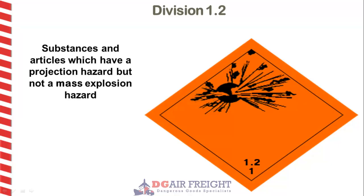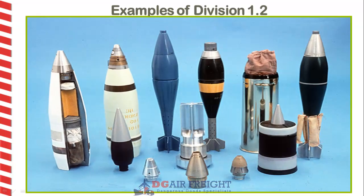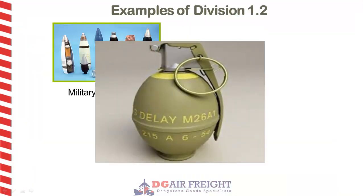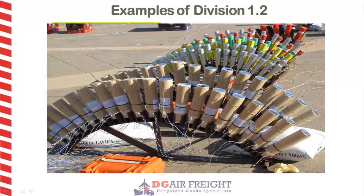The next division is 1.2. These are explosives that have a projection hazard, but not a mass explosion hazard. Examples of Division 1.2 are some forms of military ammunition, grenades and display fireworks.